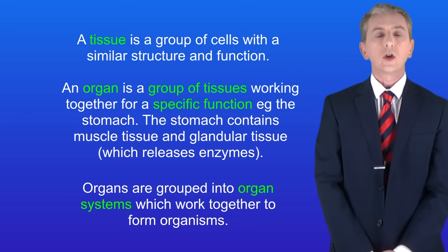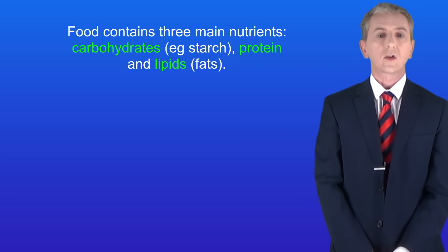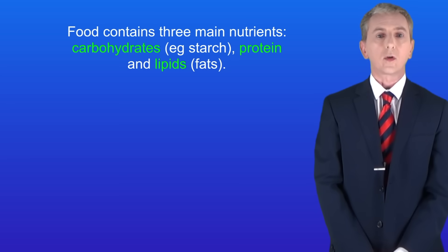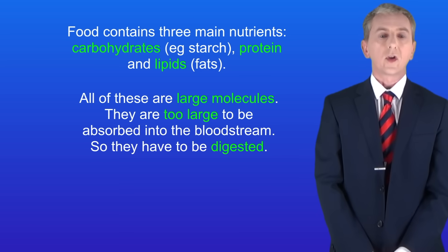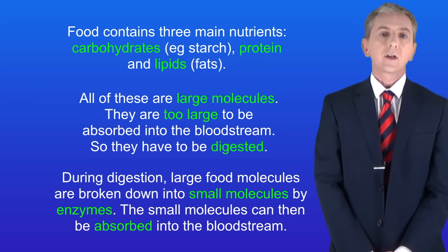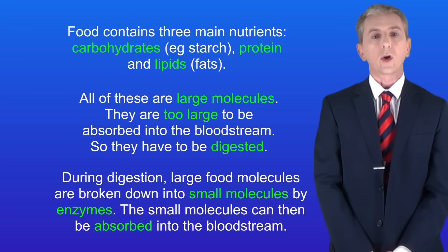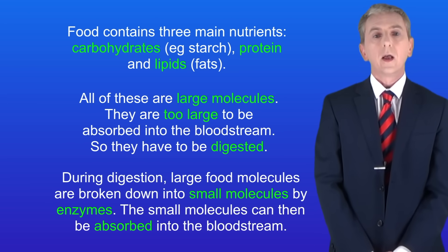Before we start we need to look at the nutrients we find in food. Food contains three main nutrients: carbohydrates such as starch, protein, and lipids which are also called fats. All of these are large molecules — in fact they're too large to be absorbed into the bloodstream, so they have to be digested. During digestion, large food molecules are broken down into small molecules by enzymes, and the small molecules can then be absorbed into the bloodstream.